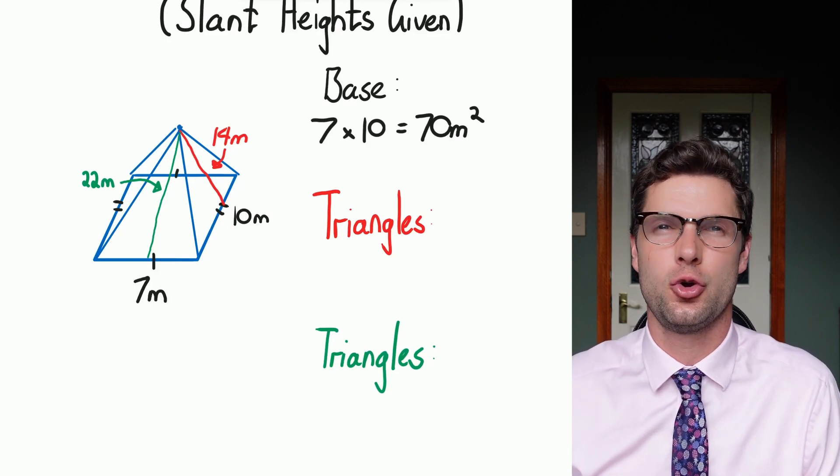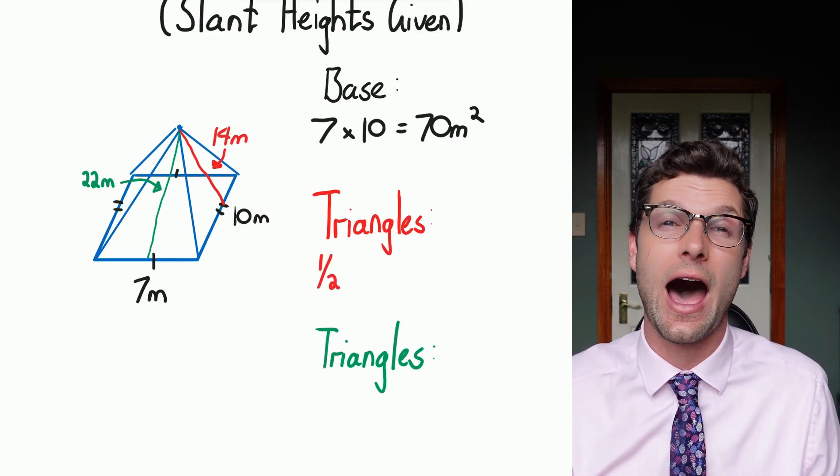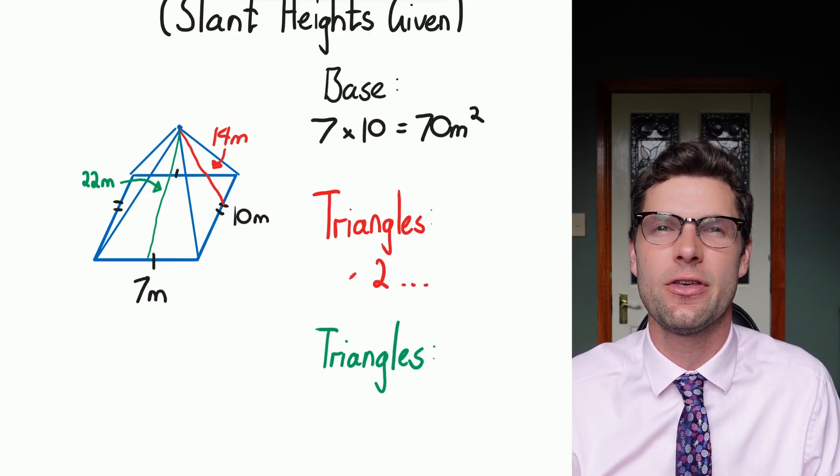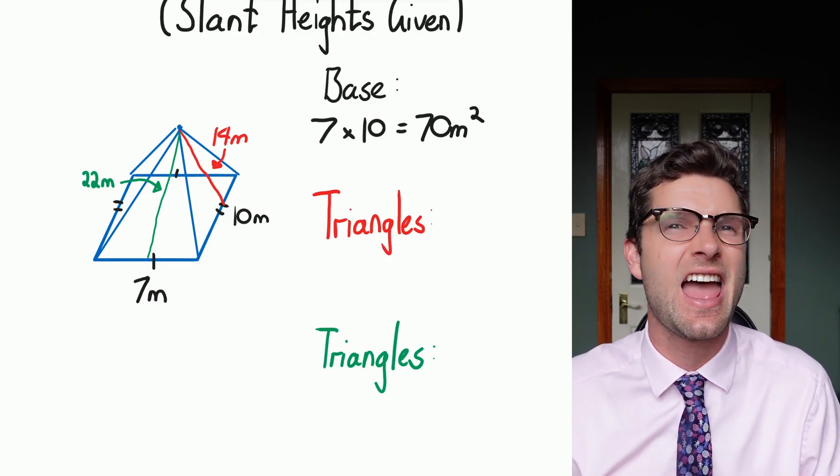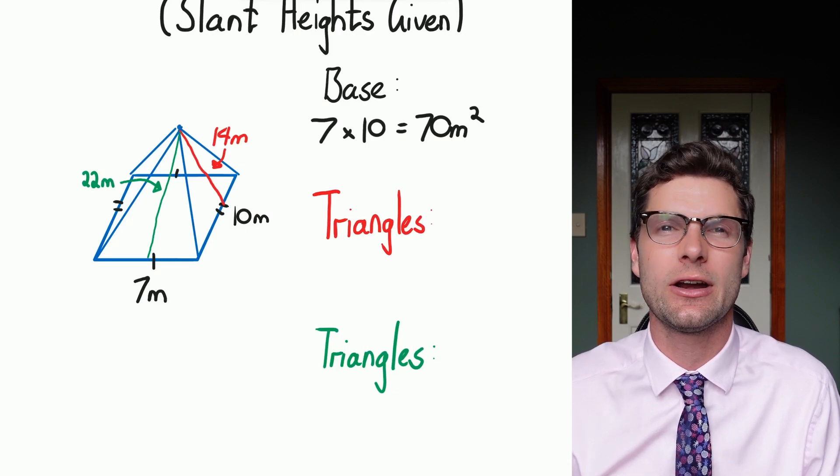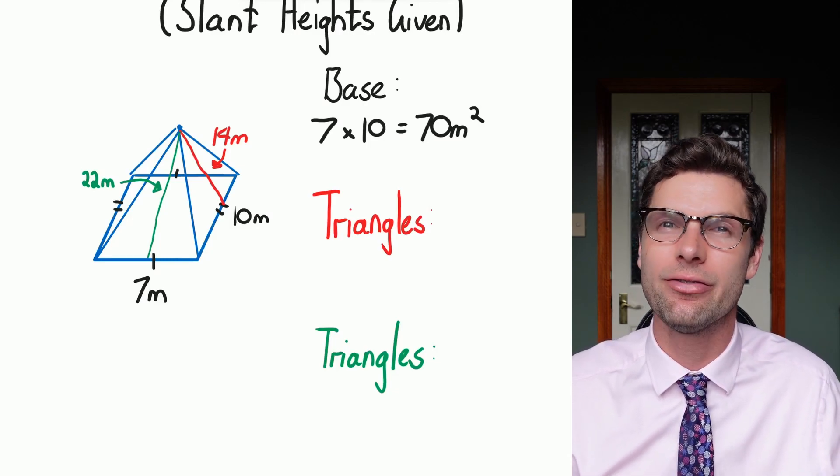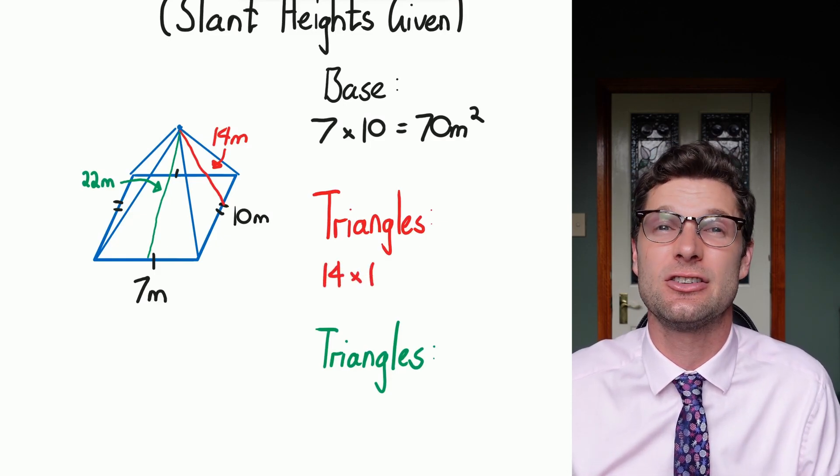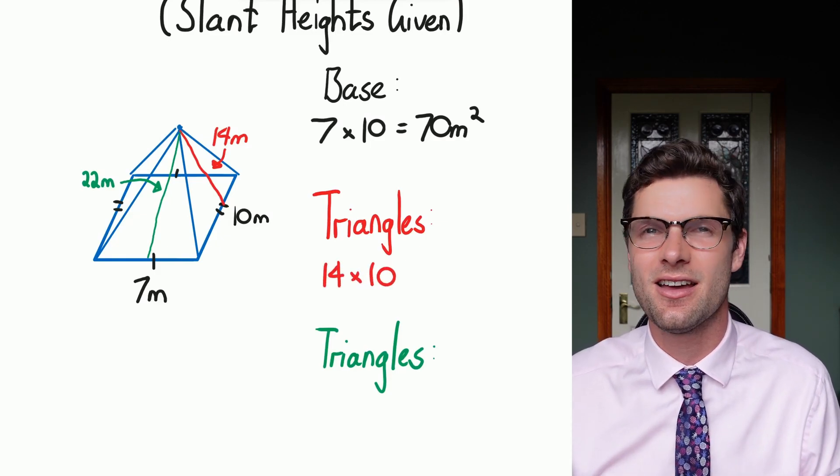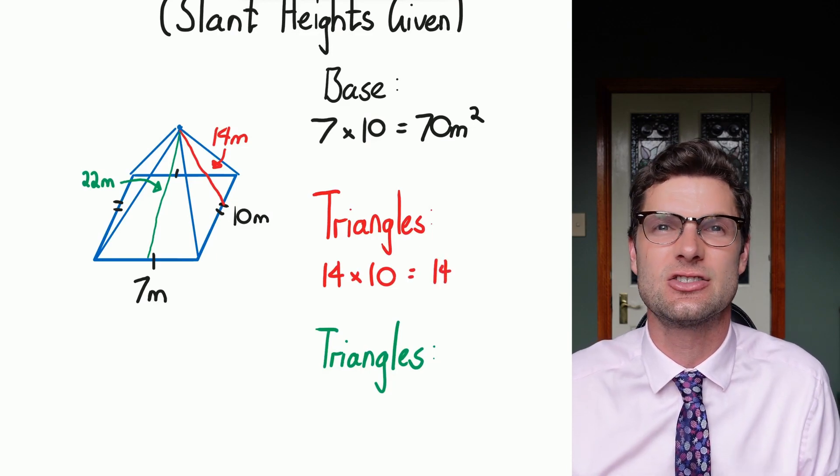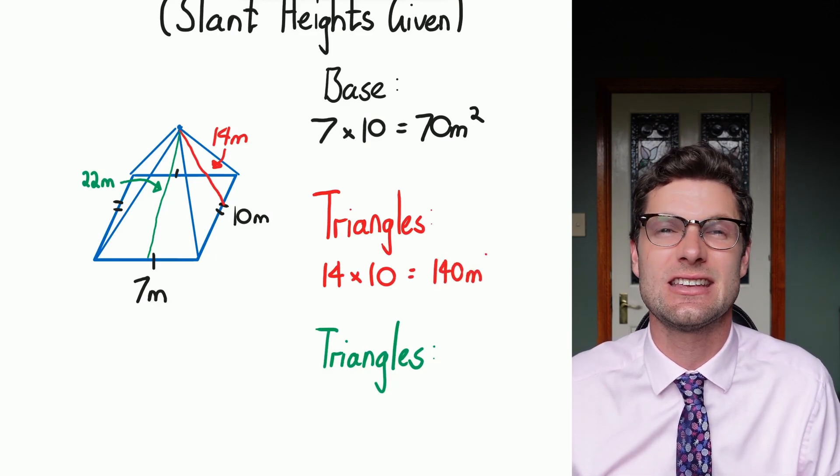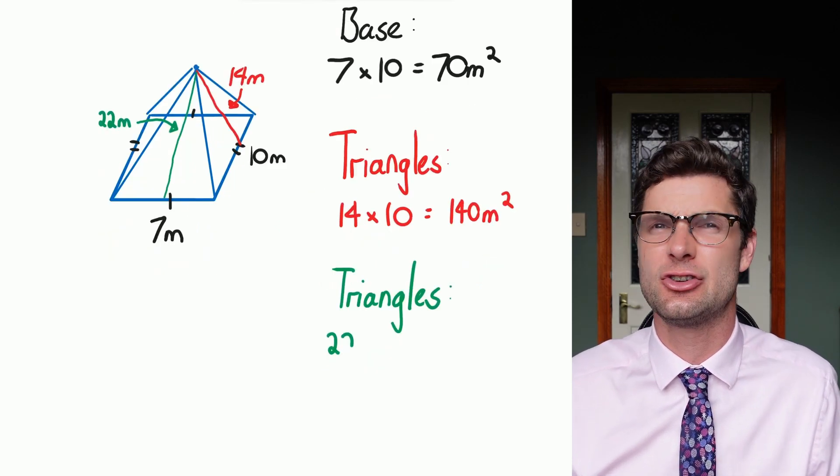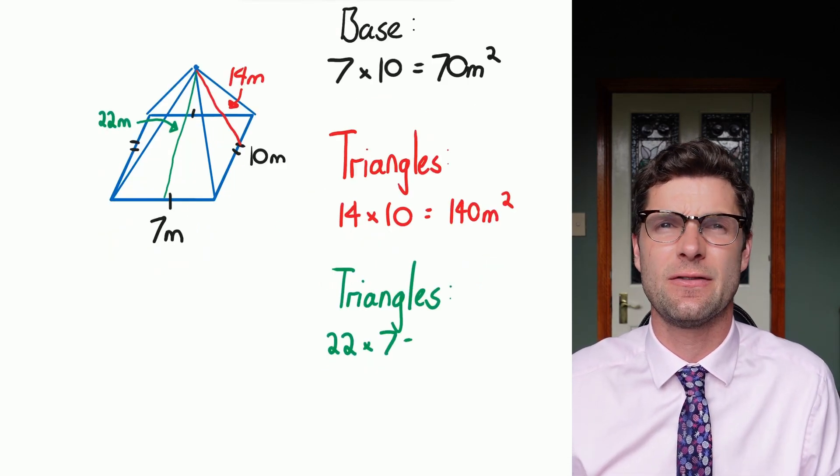So then to find out the area of these two red triangles, I would just have to do a half multiplied by 14 times by 10, but because I've got two of them I have to multiply it by 2. And just as a trick to make this a little bit quicker, because a triangle is a half and I've got two of them, those two things cancel out. So all I have to do is 14 times 10, which gives me 140 meters squared. And then I'm just going to do the same thing for the green triangles as well. Throw that in your calculator, 22 multiplied by 7 is 154 meters squared.